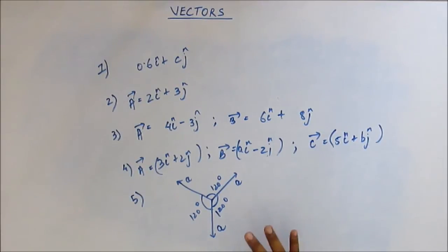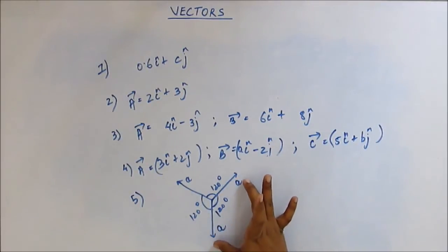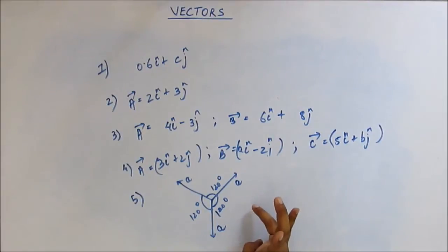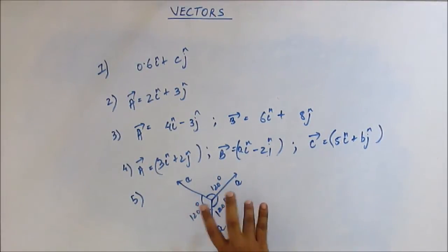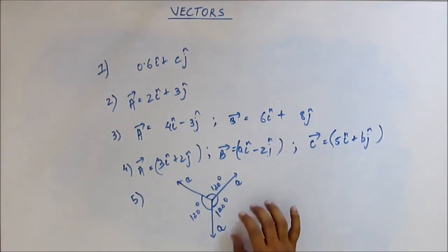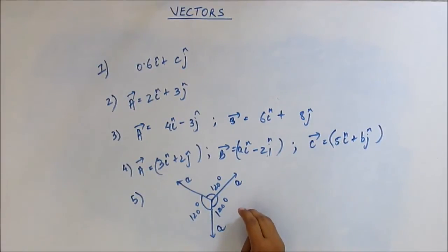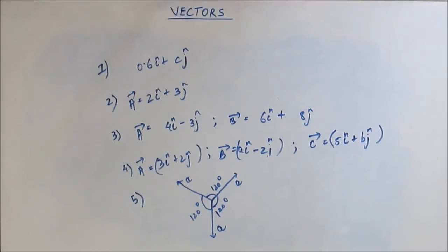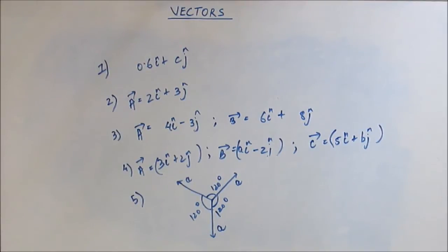We are progressing. What you have to do is use the same formula as before for any two of the vectors, find their resultant, and then from that resultant and the third remaining vector, find the summation again. That gives you the net summation — sum two vectors, get a result, add that resultant to the third vector, and you get the final result. Use both formulas we have studied: the formula for the magnitude of the resultant vector and the angle it makes.